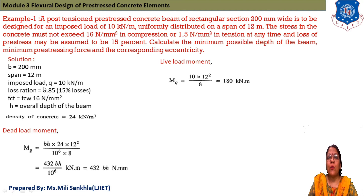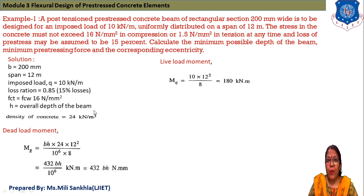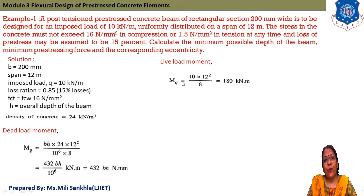The loss ratio eta is equal to 0.85, i.e., after 15% losses. FCT (tensile stress) = 1.5 N/mm² and FCW = 16 N/mm². H is the overall depth of beam; density of concrete is 24 kN/m³. First, we find the live load moment: M_Q = WL²/8. The beam is simply supported; W = 10, L = 12 m, giving M_Q = 180 kN·m.